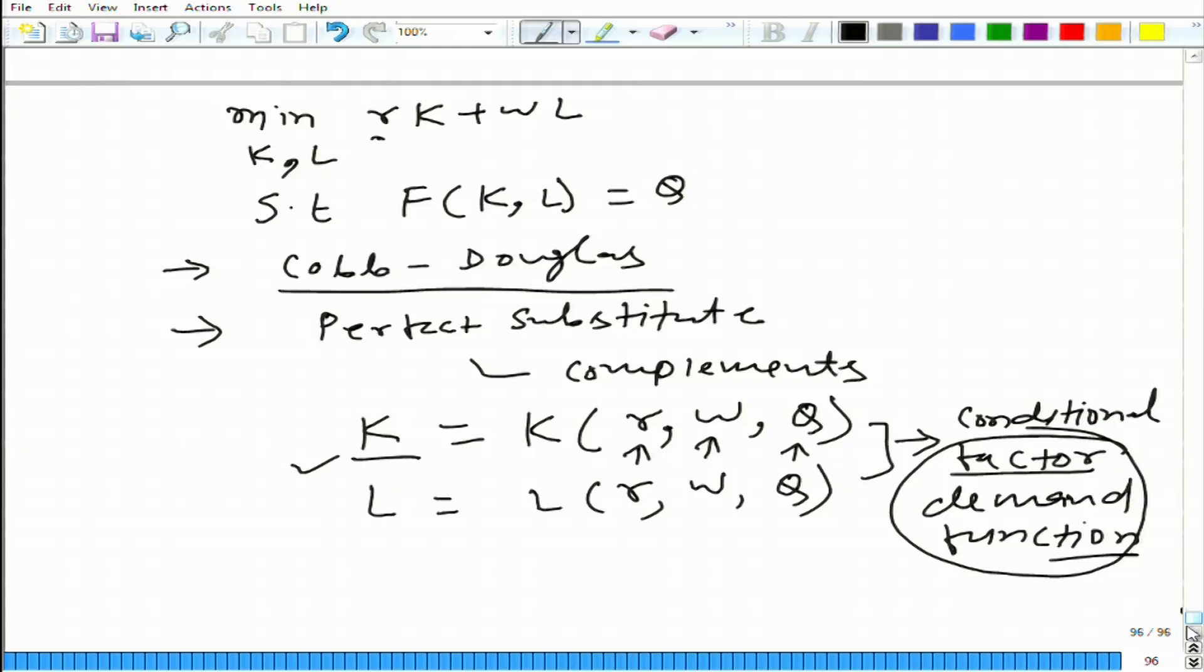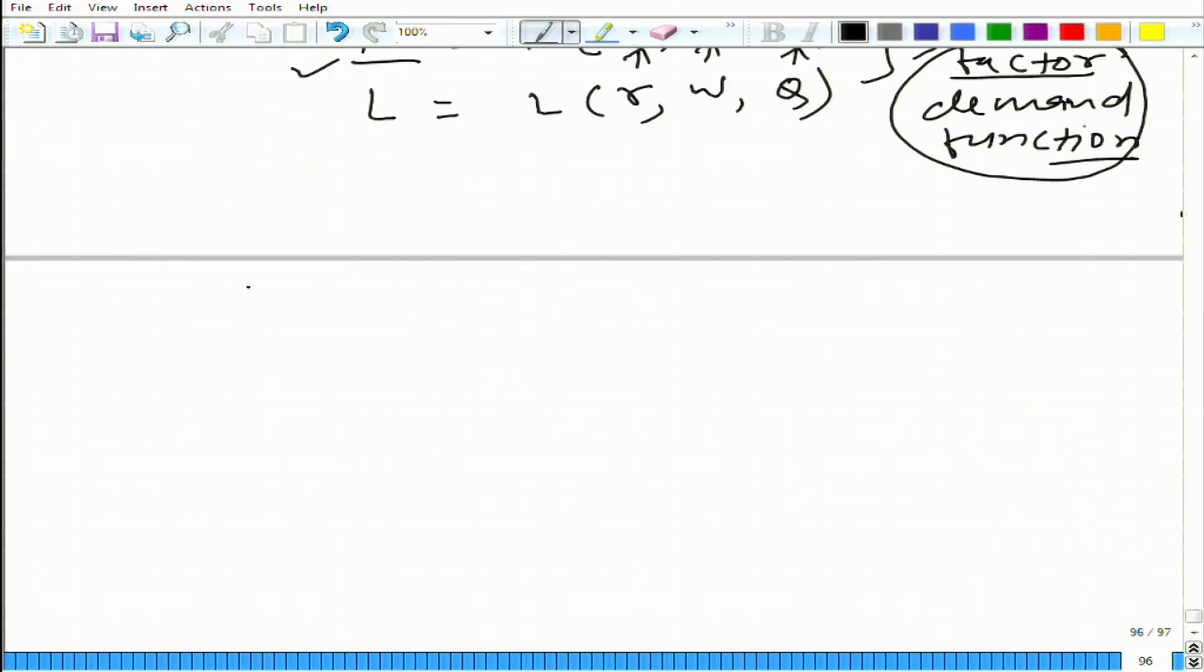Now, why are we calling it conditional? Let us look at it. What are we doing? Here we have an isoquant and here we have an iso-cost line. The idea is to figure out the combination of inputs that minimizes the cost and is also able to produce Q amount of output.